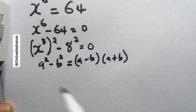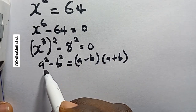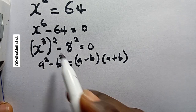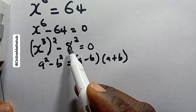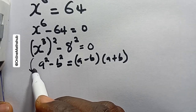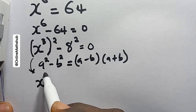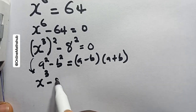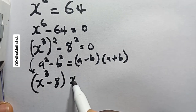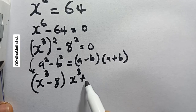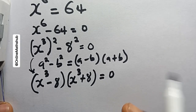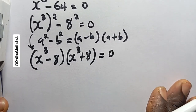Remember that a squared minus b squared can be expanded as a minus b multiplied by a plus b. That is the rule I'm going to use to expand this. Applying that here, a is equal to x to the power of 3 and b is equal to 8.